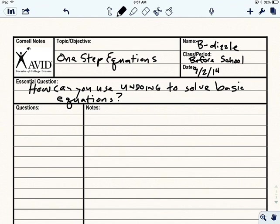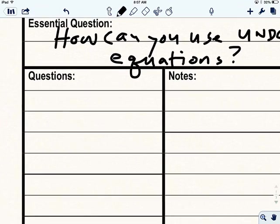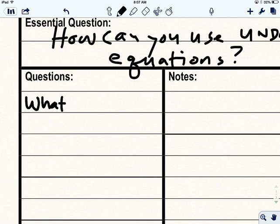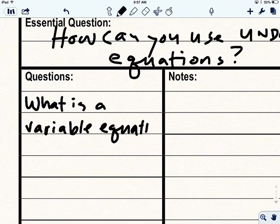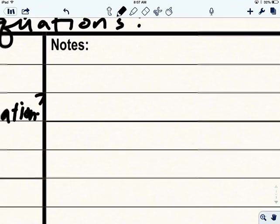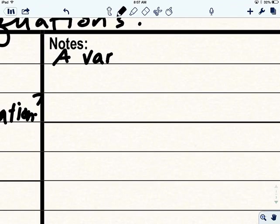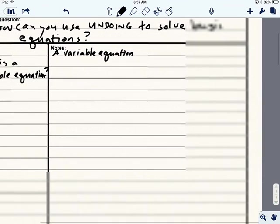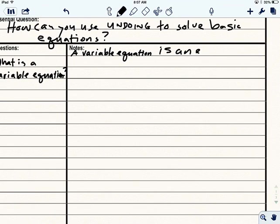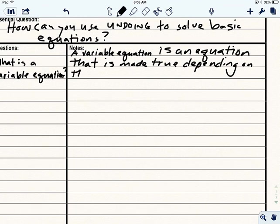So the first question we're going to think about is, what is a variable equation? And the answer to that question is, a variable equation is an equation that is made true depending on the value of a variable.